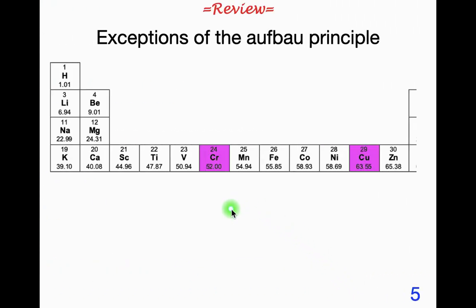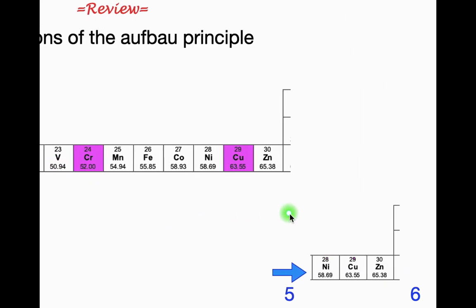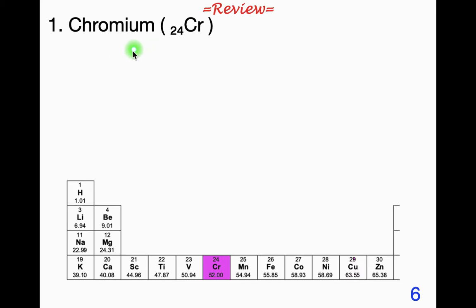Now there's a couple of exceptions to the Aufbau principle: chromium and copper. You learned these last year. So first let's look at chromium. Now the expected electron configuration for chromium would be this. This is 4s2 and then 3d1, 2, 3, 4. So we would think that it would be that.